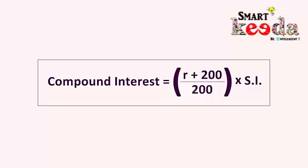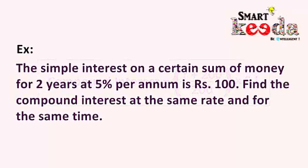Here is a question: the simple interest on a certain sum of money for two years at five percent per annum rate is one hundred rupees. Find the compound interest at the same rate and for the same time. In the given question, rate is five percent and simple interest is one hundred rupees.